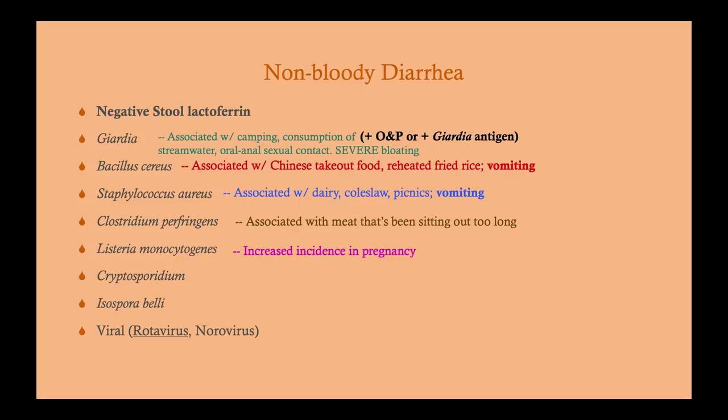Clostridium perfringens is associated with meat that's been sitting out too long. So: Clostridium perfringens — meat; Staph aureus — dairy; Bacillus cereus — Chinese fried rice. I'm not saying these are the only ways you can get them — I'm saying that's how the USMLE likes to present them.